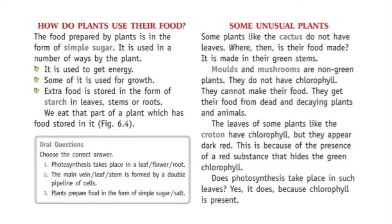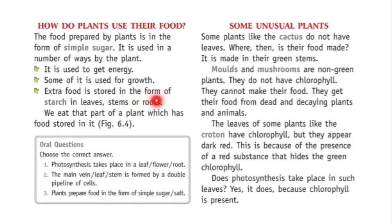The next topic is: how do plants use their food? The food prepared by the plant is in the form of simple sugar. It is used in a number of ways — it is used to get energy, some of it is used for growth, and extra food is stored in the form of starch in leaves, stems, and roots. We eat that part of the plant which has food stored in it.